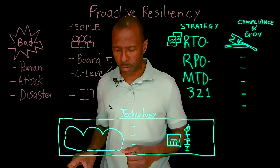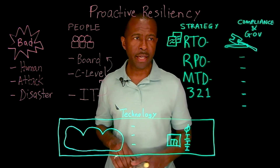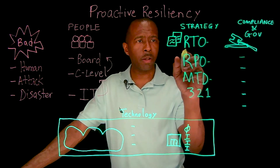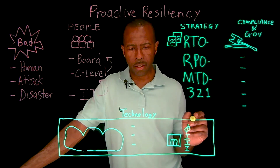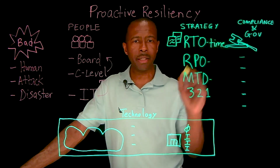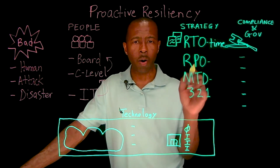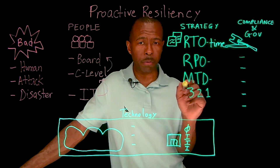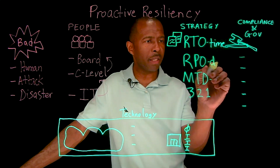There are a few different strategies within a proactive resiliency approach. One strategy that's pretty old but effective is called RTO, or Recovery Time Objective. The Recovery Time Objective deals with the amount of time it takes to bring that environment back online — how often will you take those backups in order to bring that environment or business application back up.